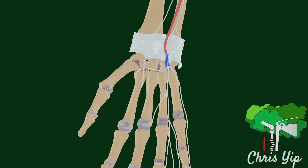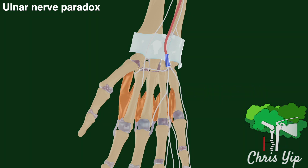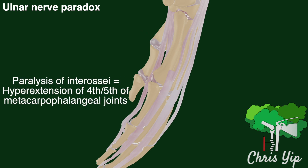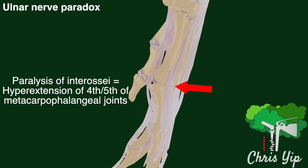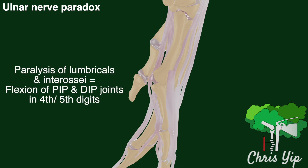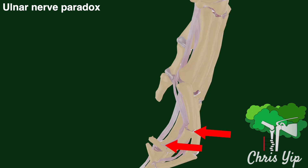An important feature distinguishing an ulnar tunnel syndrome from a cubital tunnel syndrome is the ulnar nerve paradox. The ulnar nerve supplies the third and fourth lumbricals of the hand, as well as all the palmar and dorsal interossei muscles. During attempted extension of the fingers, paralysis of the interossei leads to unopposed hyperextension of the MCP joint due to extensor digitorum, and paralysis of the lumbricals and interossei leads to flexion of both interphalangeal joints by the flexor digitorum profundus and superficialis.